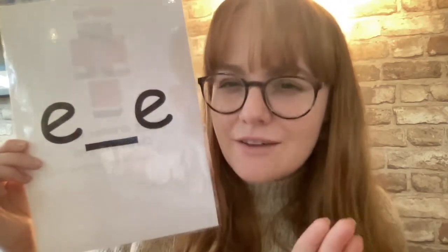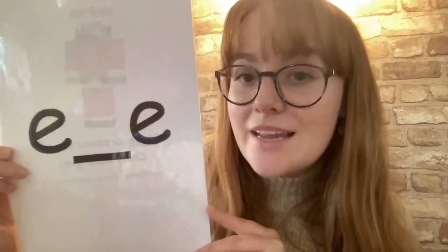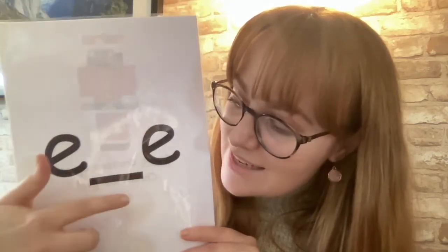Should we do it in a wibbly wobbly voice first just to make sure we definitely know that it's e? My turn e, your turn. What two letters can you see making the e sound today? We've got the letters e and e. Remember when they're two letters it makes a digraph, but this isn't just any digraph. Can you tell me what kind of digraph this is today? It's a split digraph, you're right.